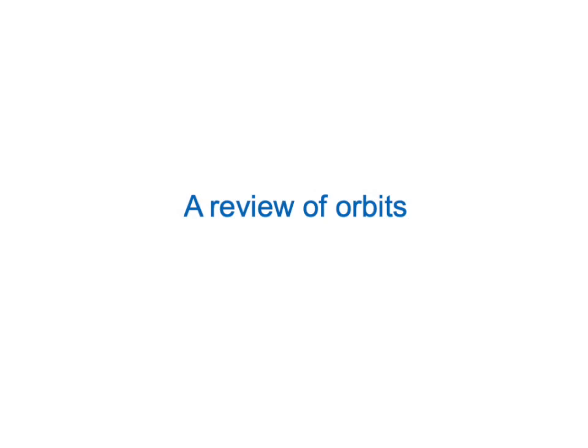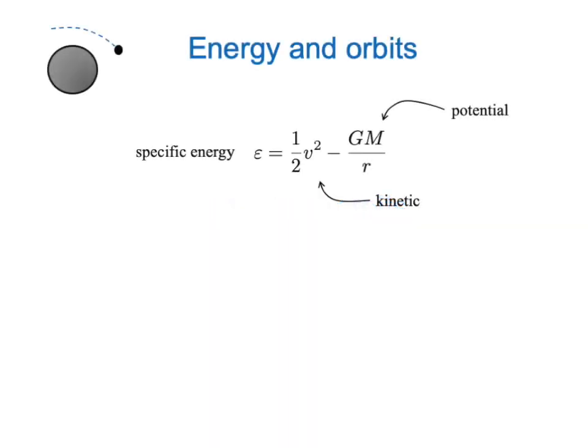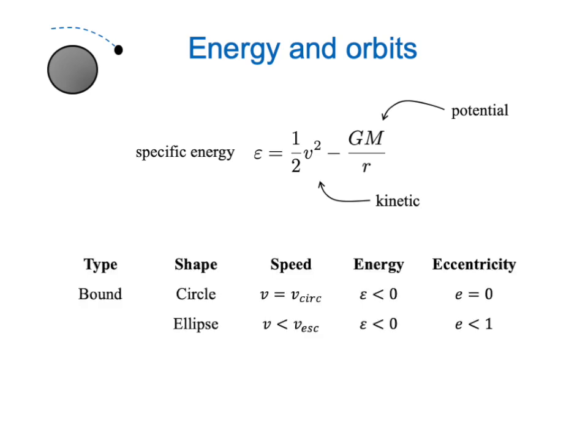Let's briefly review what we know about orbital mechanics. The key mechanical quantity in determining the character of an orbit is the specific energy — the energy per unit mass of the satellite. It's the sum of two parts: a kinetic part, which is one-half v squared, and a potential part, which is minus GM over r, where M is the mass of the planet. The value of the specific energy tells us whether we have a bound or an unbound orbit.